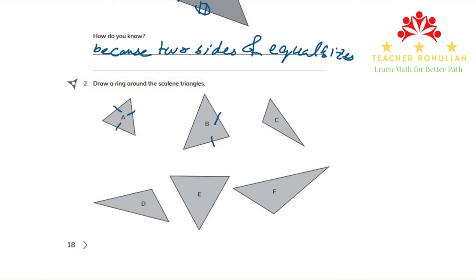And the triangles which are scalene is C, D, and F. And triangle E is also isosceles because these two sides are equal. We are done with question number two.